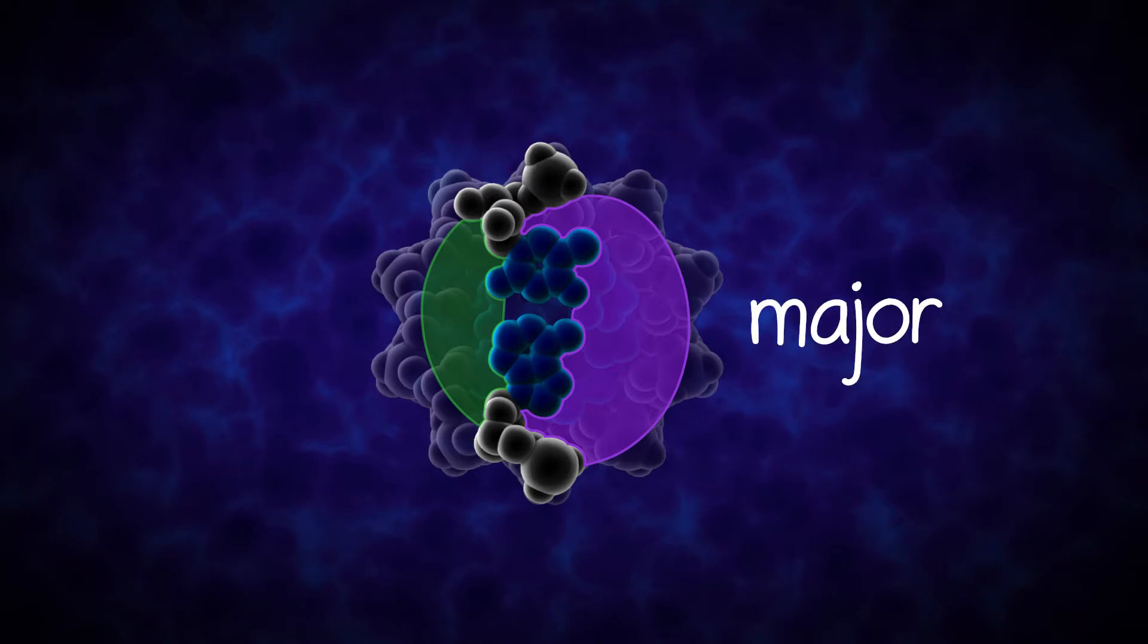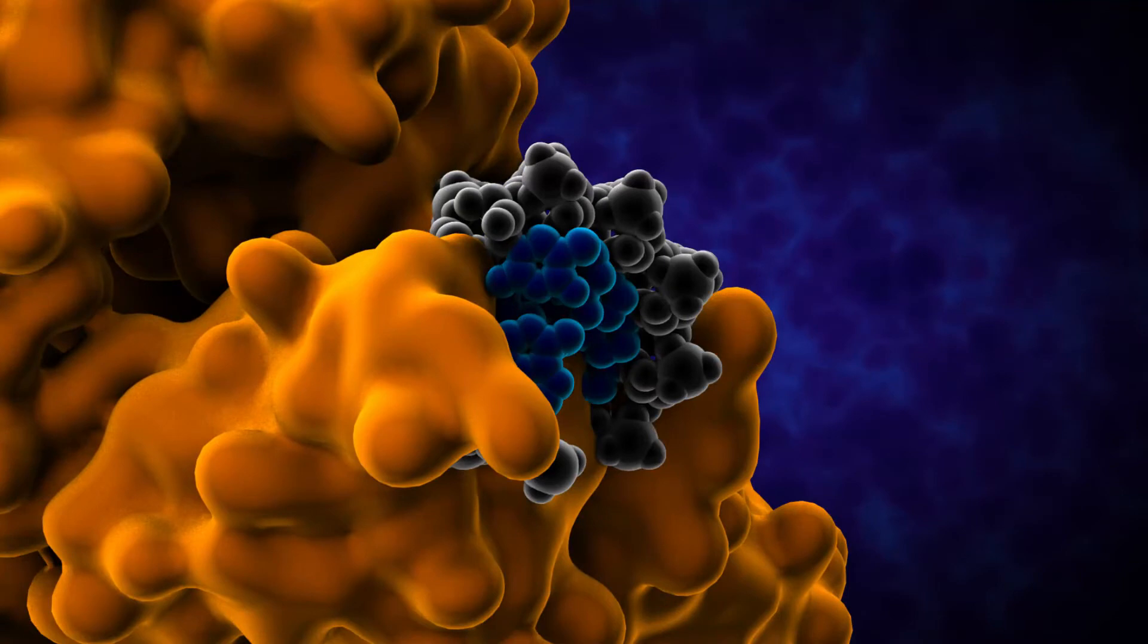The major groove contains base pair specific information, while the minor groove is largely base pair non-specific. This is because of the patterns of hydrogen bond acceptors and donors that proteins can interact with in the grooves.